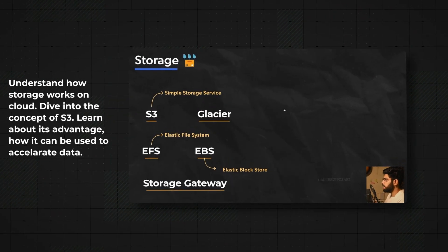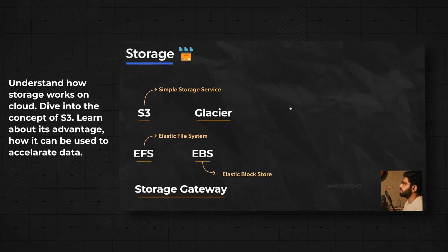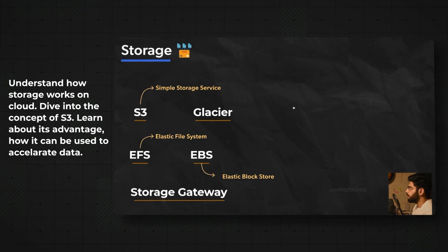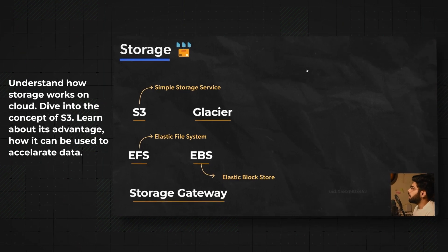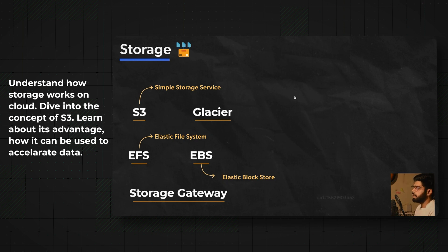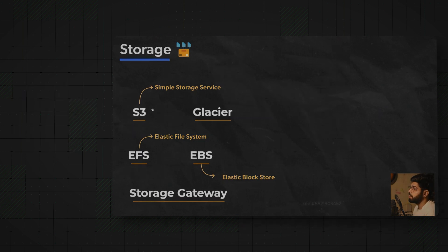Data needs to be stored somewhere so that we can process it later on or in real time. It offers storage in three broad categories: objects, block, and file storage. Storage services also help with networking and content delivery to the end customer. Within this, there is a service called S3, which is one of the most famous services on Amazon.